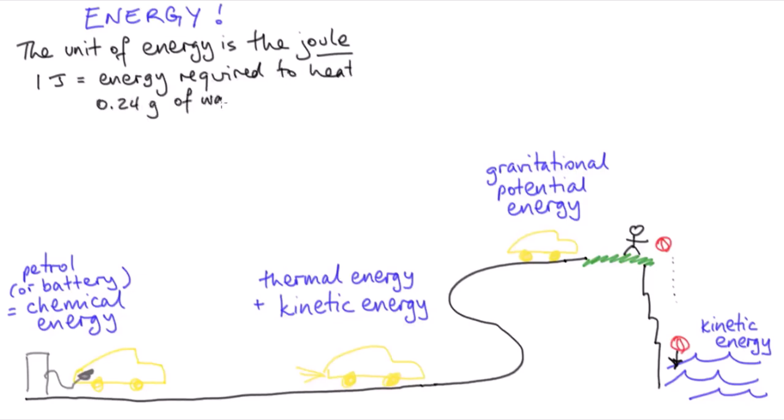Now this definition probably seems a little bit arbitrary, but it makes the equations for other types of energy look neater. For example, the kinetic energy of an object is one-half mv squared when mass is measured in kilograms and velocity is measured in meters per second, with energy in joules.